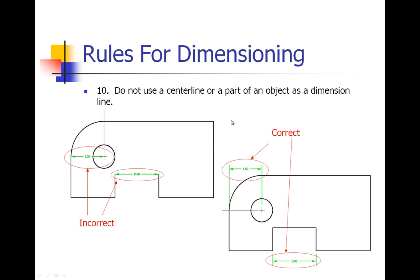Number ten: do not use a center line or a part of an object as a dimension line. So on this particular one we are using the center line as our dimension line. You don't want to do that because it's not very clear. On this part it even looks like part of our line is missing. The correct way to do that would be to pull those measurements outside of our part. So we have a little gap here, a little sixteenth inch gap. We've pulled that measurement outside of our part. It makes it much easier to read.